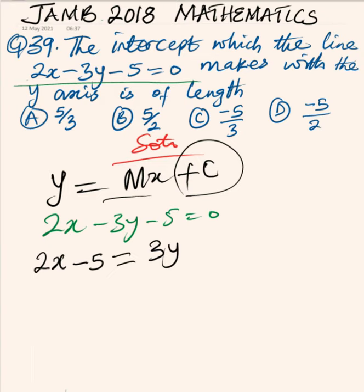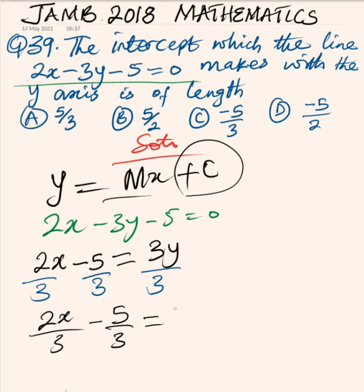Now we are going to divide through by 3, that is the coefficient of y. So we have this divided by 3, this divided by 3, and this divided by 3. So we are going to have 2x over 3 minus 5 over 3 equal to y.